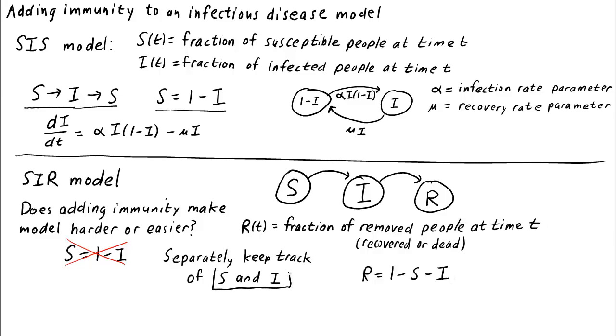Since we have to keep track of both s and i, we're going to need two different differential equations. One for the change in s and one for the change in i. To write down our equation, let's label our diagram with the transition rates.